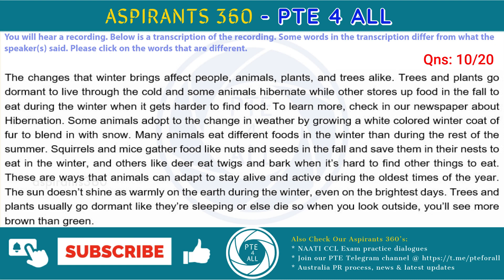Squirrels and mice gather food like nuts and seeds in the fall and save them in their nests to eat in the winter, and others like deer eat twigs and bark when it's hard to find other things to eat. These are ways that animals can adapt to stay alive and active during the coldest times of the year. The sun doesn't shine as warmly on the earth during the winter, even on the brightest days. Trees and plants usually go dormant like they are sleeping or else die, so when you look outside, you will see more brown than green.